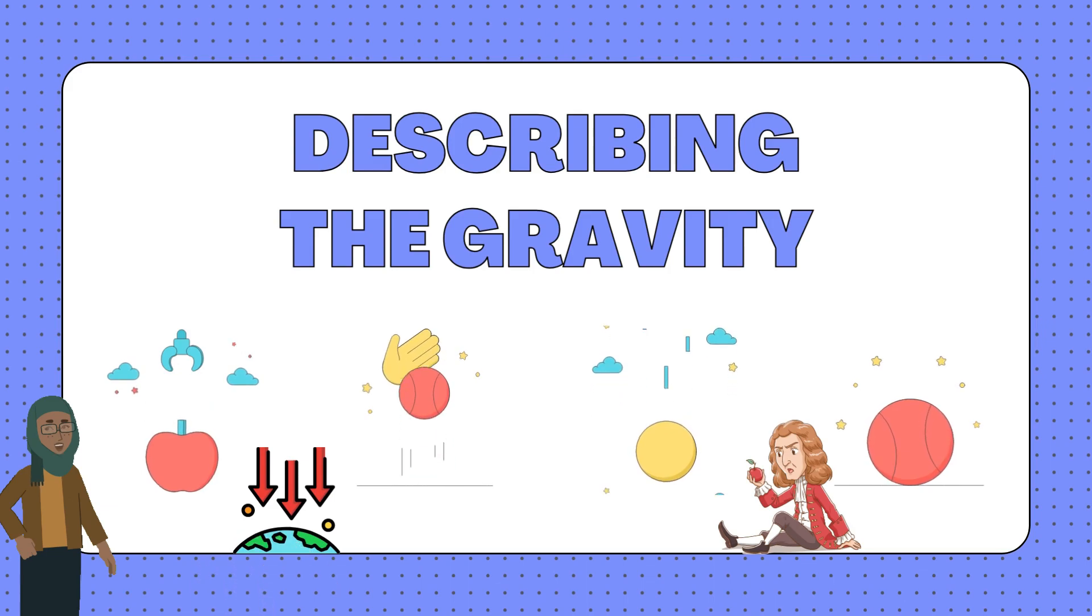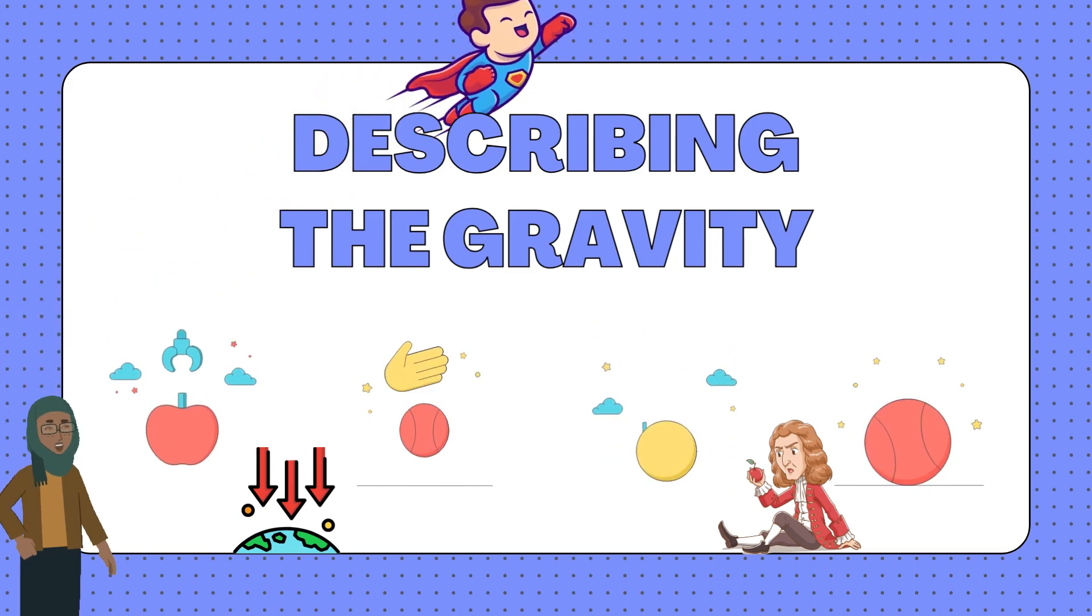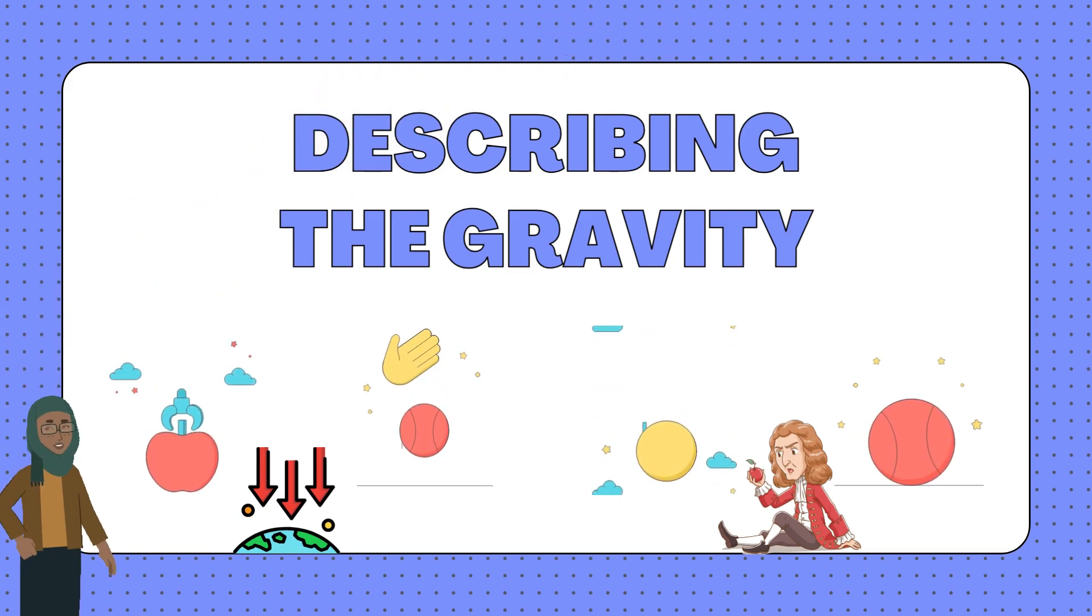But guess what? In space, there's not much gravity at all. So when astronauts go up there, they float around like superheroes. It's like a cosmic playground where they can do somersaults and flips.